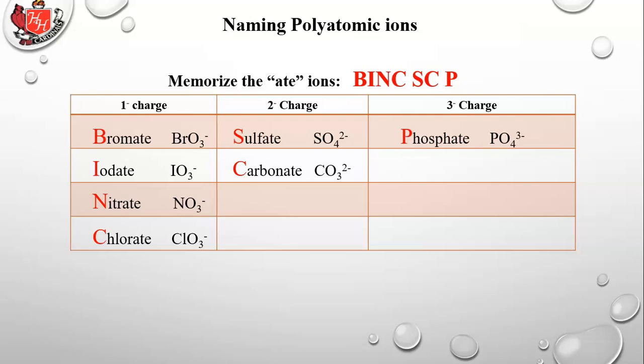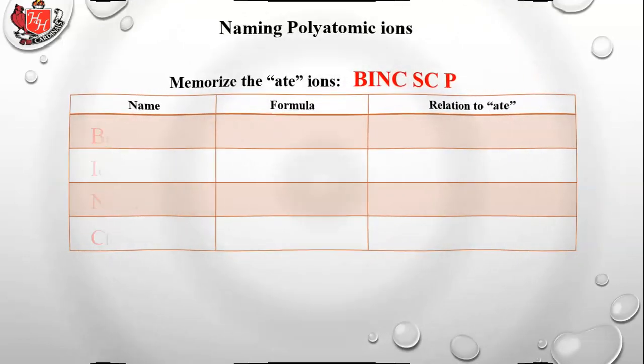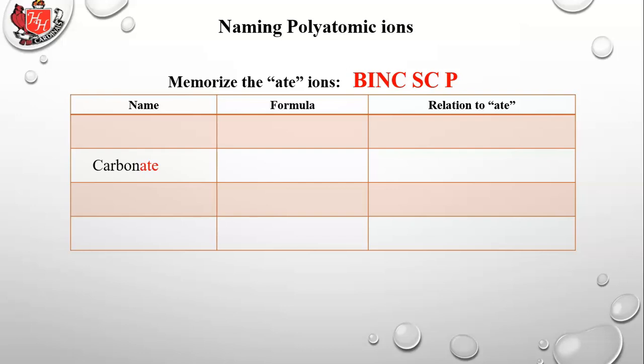The way you name different compounds with these molecular ions is you memorize the eight ions, in this case carbonate. The formula for that is CO3 2-. If you add one oxygen to it you have CO4 2-. Notice that the charge has not changed. That's one more oxygen than ate and that's called percarbonate.